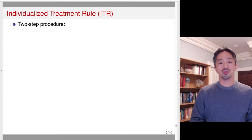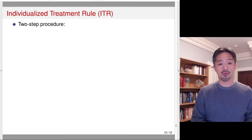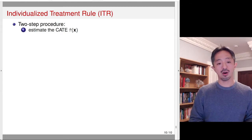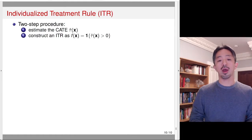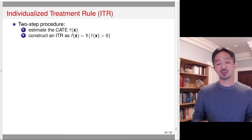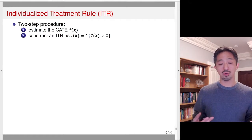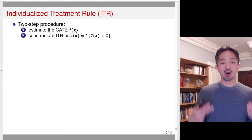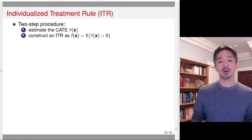Finally, let's consider the individualized treatment rule, or ITR. Once we estimate the conditional average treatment effect CATE, we can construct an ITR using a simple two-step procedure. First, estimate the CATE — call it τ̂(x) — using one of the ML approaches discussed. Then construct an ITR based on whether τ̂ is positive or not. If the CATE is positive, on average you're likely to benefit from treatment, so you're assigned to treatment. If it's negative, you're likely to be harmed, so you're assigned to control. This is an effective ITR that can improve the average outcome.